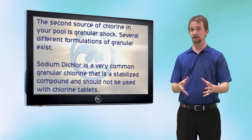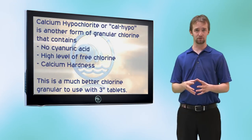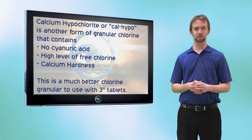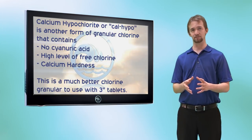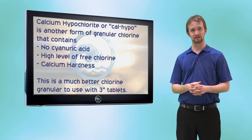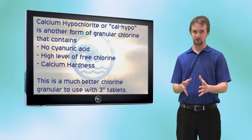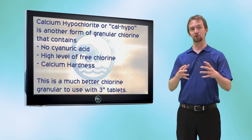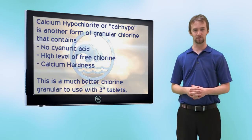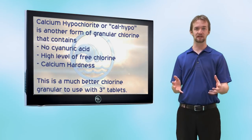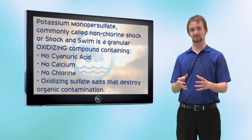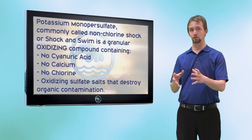Calcium hypochlorite is another form of chlorine shock — this is the one you'll normally want to use for your swimming pool. It has a high level of chlorine that's immediately available, but it does not contain any cyanuric acid. However, calcium hypochlorite does have calcium, so overuse will put too much calcium in your water, which leads to a buildup of scale.